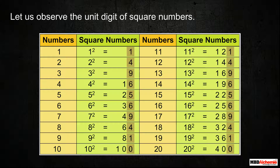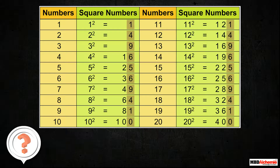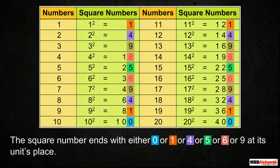Let us observe the unit digit of square numbers. Do you observe any pattern in the unit digit of the given square numbers? As we see, the square number ends with either 0, or 1, or 4, or 5, or 6, or 9 at its unit's place.